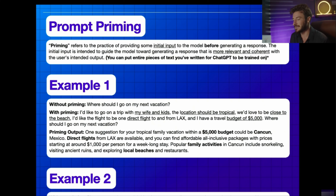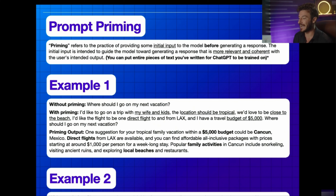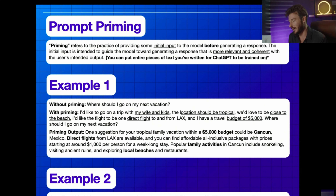This input is intended to guide a model like ChatGPT towards generating a response that's more relevant, coherent, and trained for the user's intended output. You can use entire pieces of text that you've written in the past — so you could literally paste in all of your past work from the last few months, and ChatGPT will essentially understand how to replicate your speaking style, tone, grammar, and the words that you use. And you can use that with any type of data.